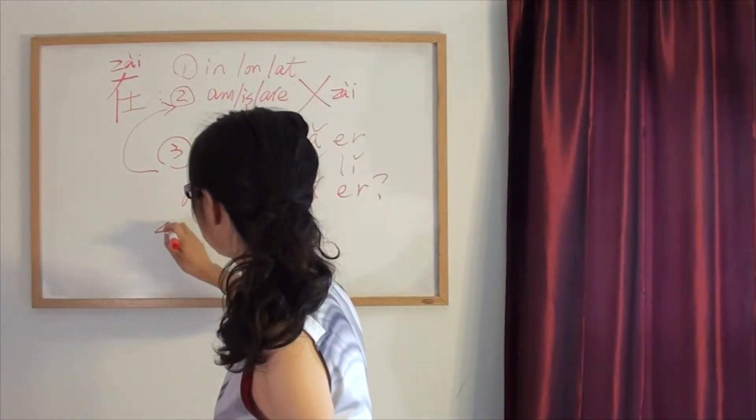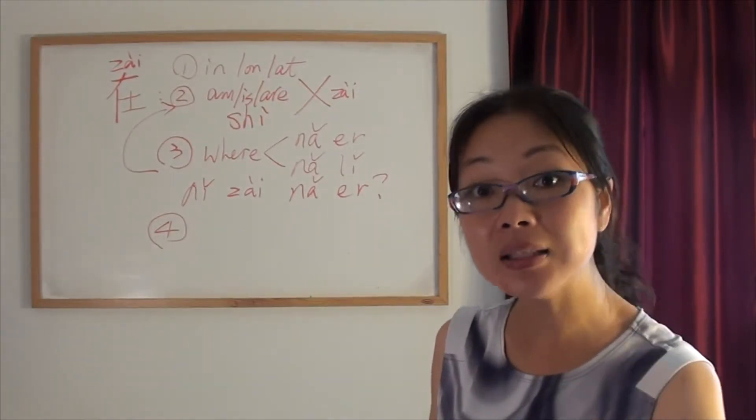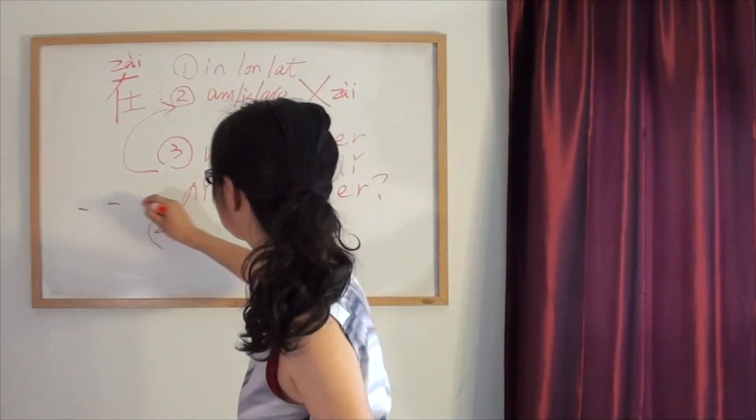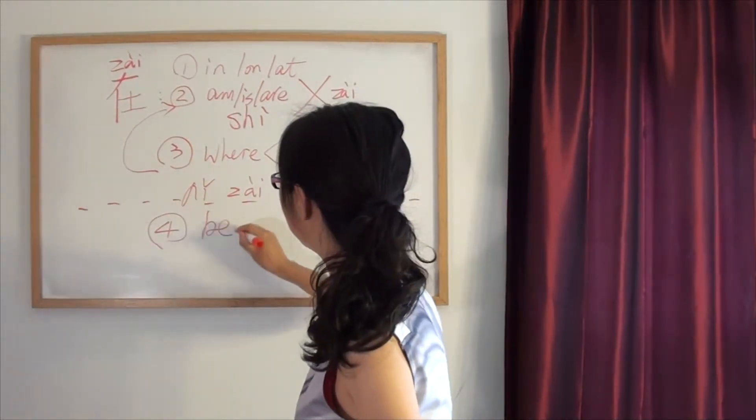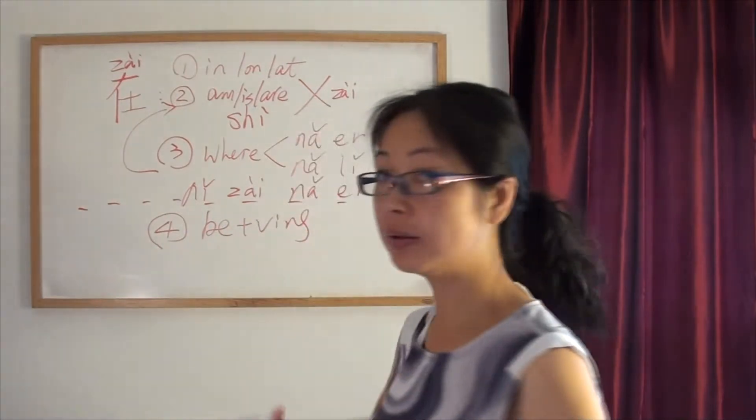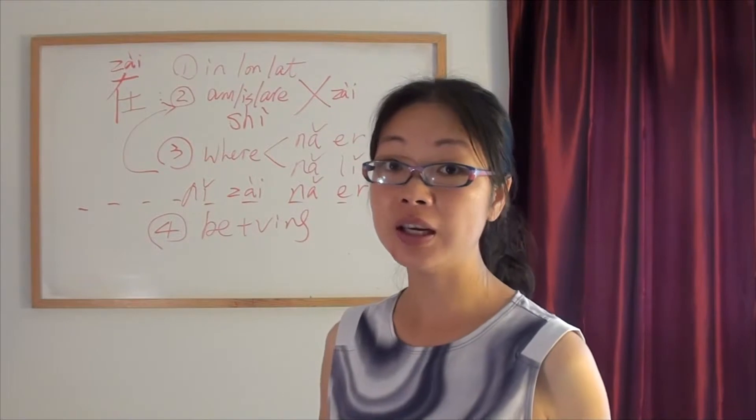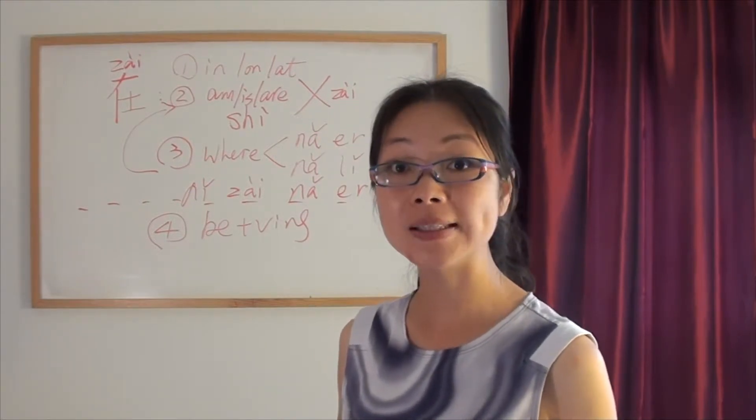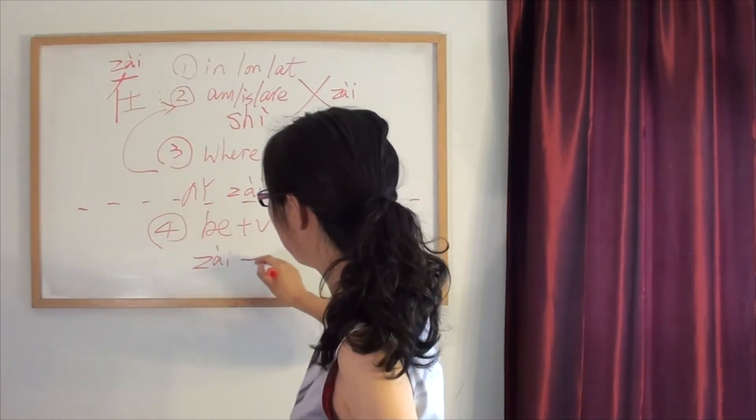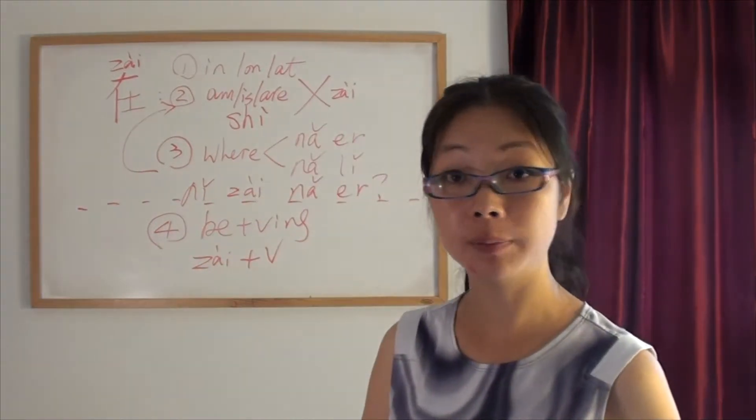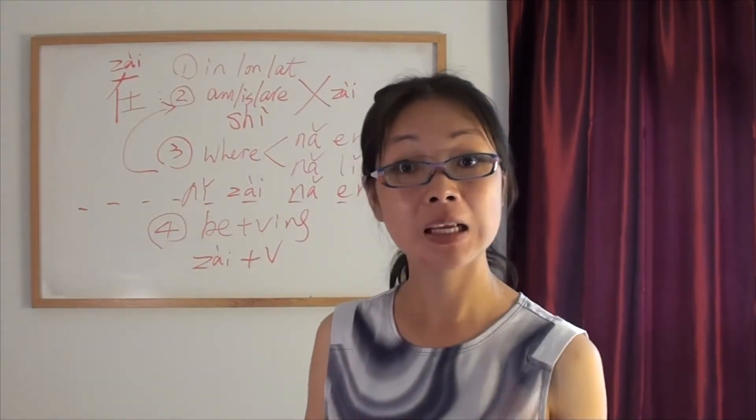Number four is what we learned yesterday. There's another meaning, totally different from this. It means be plus -ing. It means you're doing something. What are you doing? I'm drinking Coke. 我在喝可乐。We always put 再 before the verb, and it represents you are doing something.